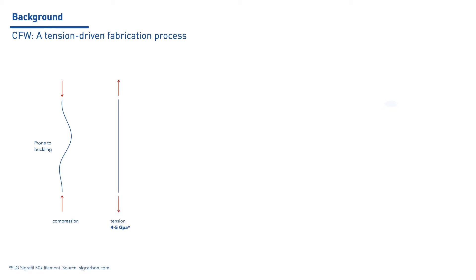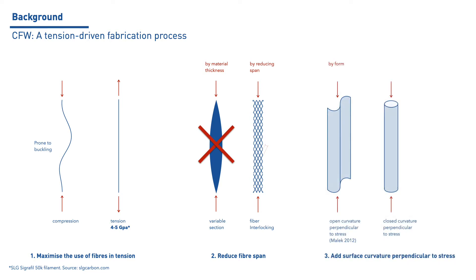Conversely, when subjected to axial tensile stress, the struts profit from the full tensile capabilities of the material. To improve the buckling strength, fiber spans should be therefore reduced, ideally by interweaving fibers, and curvature should be added perpendicular to the surface's stress direction.